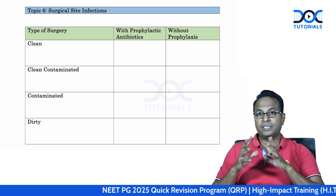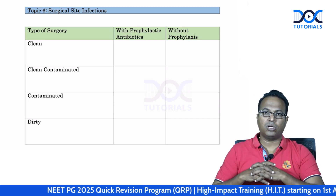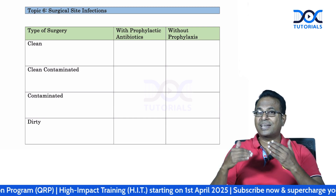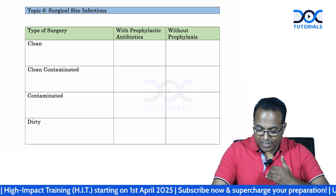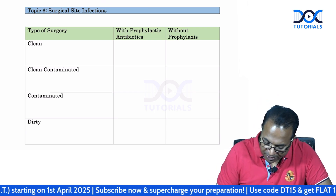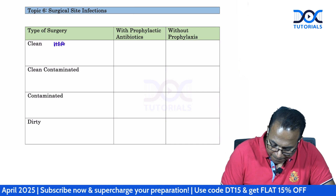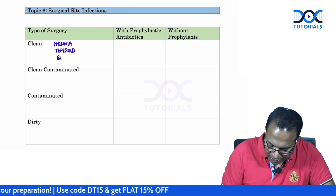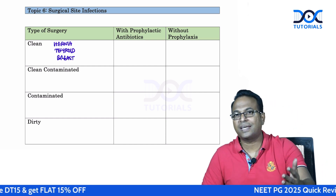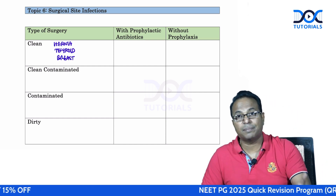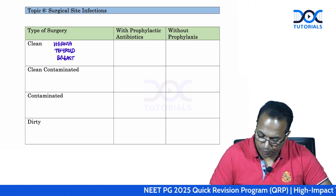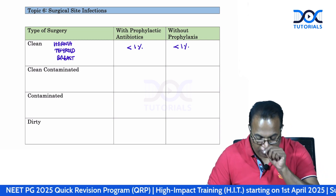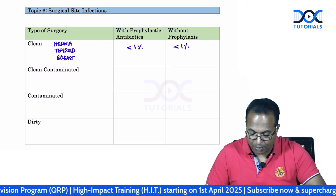Surgical site infection is a real nightmare among surgeons because we cannot answer patients about wound infection, especially for a patient who comes with a clean case. Clean case examples are hernia surgery, thyroid surgery, and breast surgery — all cases in which there is no bacteria from the operative site. The risk of infection in a clean surgery is less than 1 percentage.